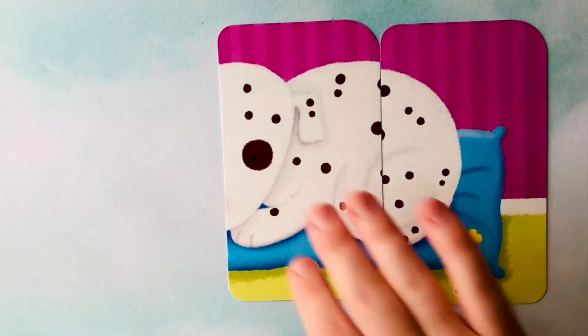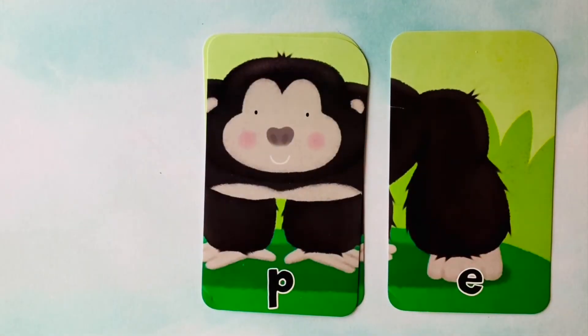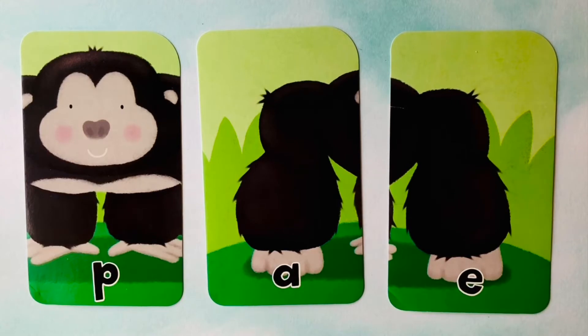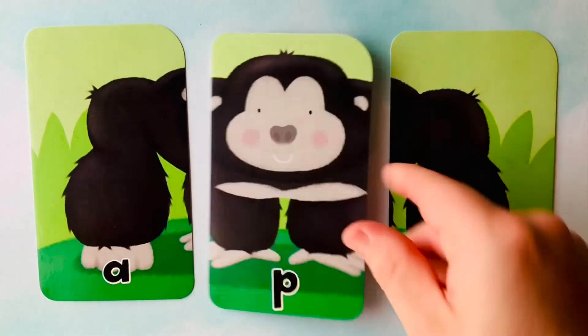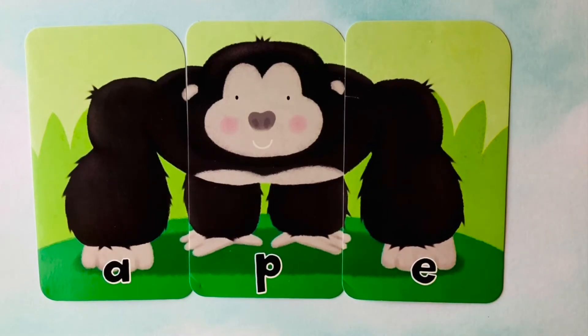Goodbye, D. See you later, O. After a while, G. I think we have time for one more. It looks like we're starting off with an E. We also have a P, and we have an A. I think we're spelling ape. Ape is spelled with an A, it follows with a P, and it finishes with an E. A-P-E is ape. A-P-E spells ape.